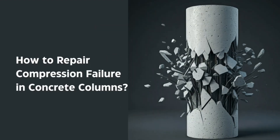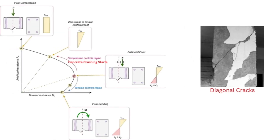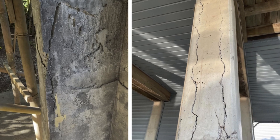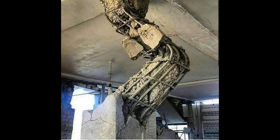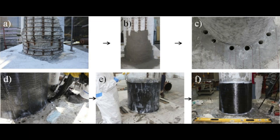During compression failure, concrete typically fails first, exhibiting structural cracks. These cracks, such as diagonal or splitting cracks, serve as early warning signs of excessive loading and potential column failure. This early indication provides an opportunity for timely retrofitting to prevent catastrophic collapse. An extreme case of compression failure, known as concrete crushing, results in complete collapse and cannot be repaired — in such instances, the damaged column must be safely removed and replaced.